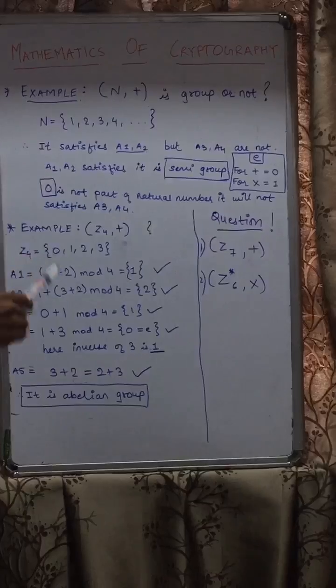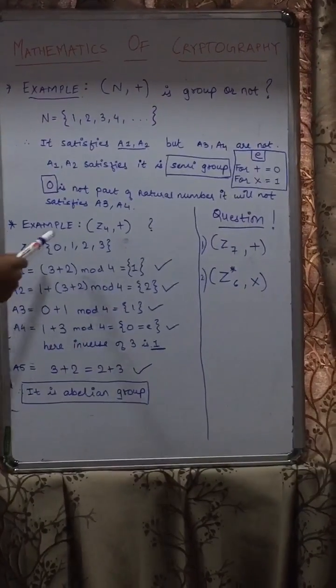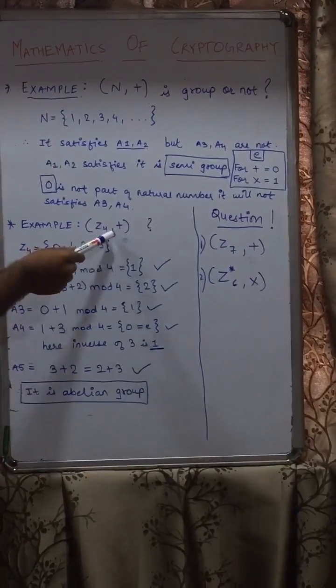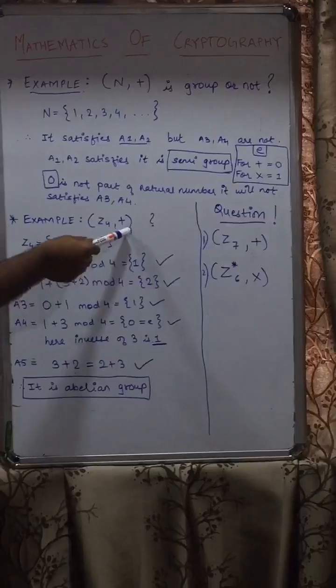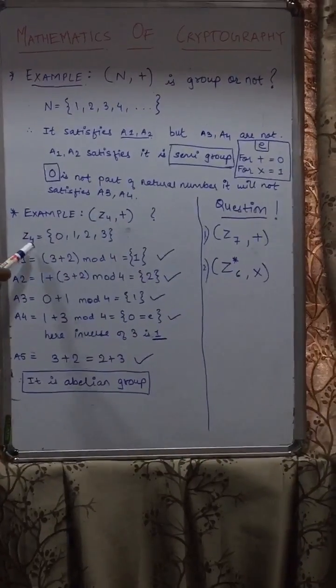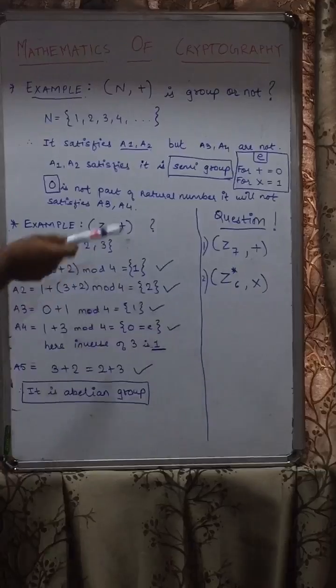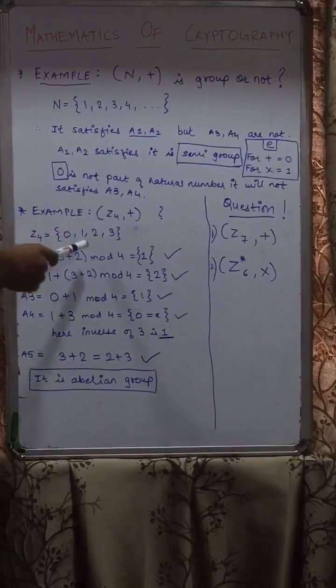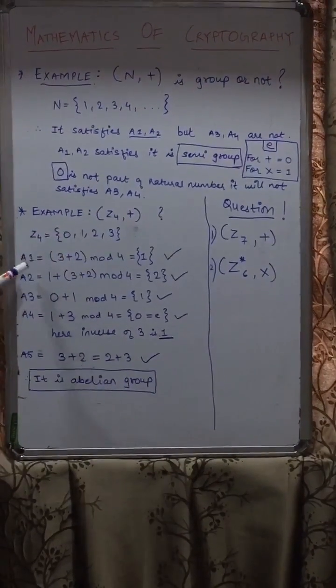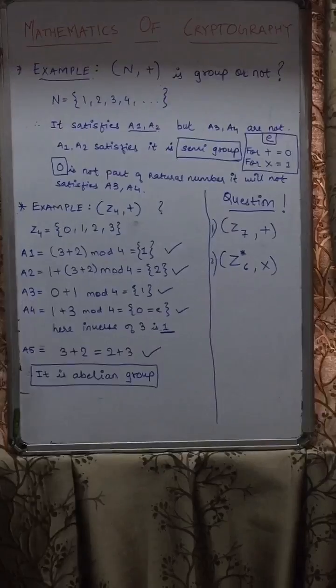Now let us take an example for integers. Another example is Z4 and the operator is again addition. So Z4 is equal to {0, 1, 2, 3} which we taught you in lecture 1. If you forgot, then refer it once again.